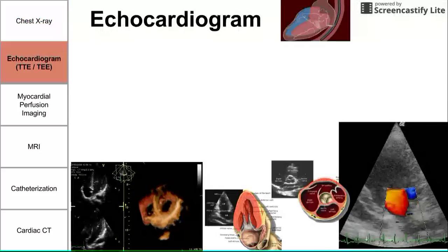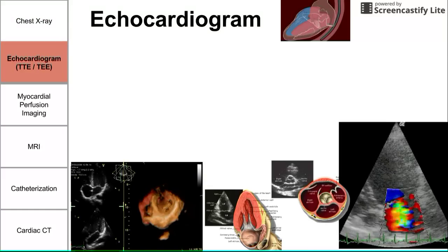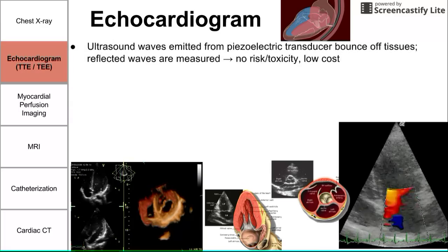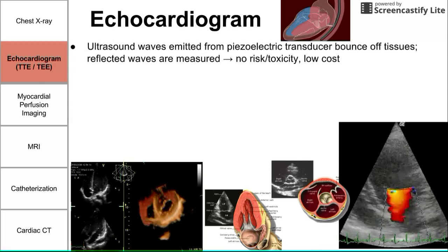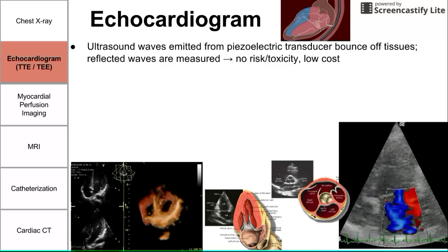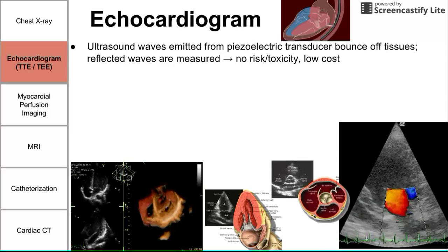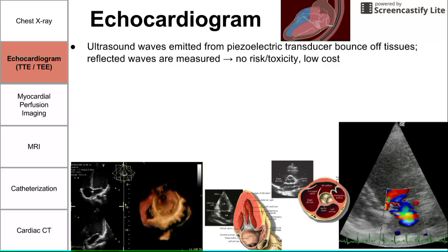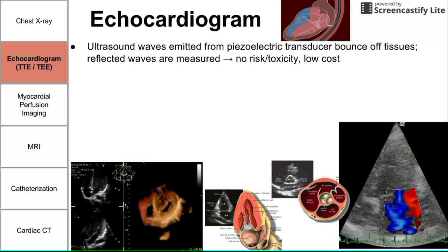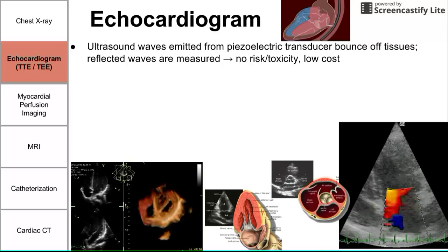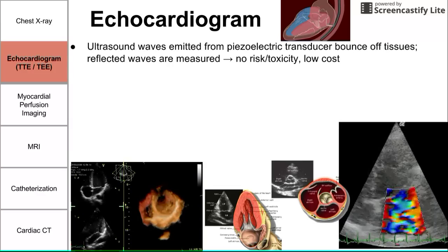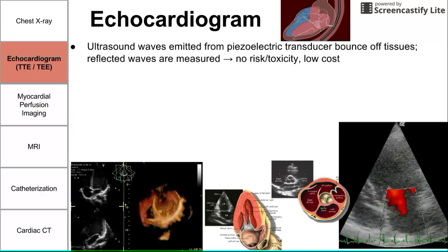Let's move on to echocardiograms — there are a lot of different methods, and you can see some moving images here too. The basic principle is that ultrasound waves are emitted from piezoelectric transducers and bounce off tissues. The reflected waves are then measured, processed by a computer, and made into an image. Because we're dealing with pressure waves, there's no significant risk or toxicity like with x-ray, and the cost is relatively low.